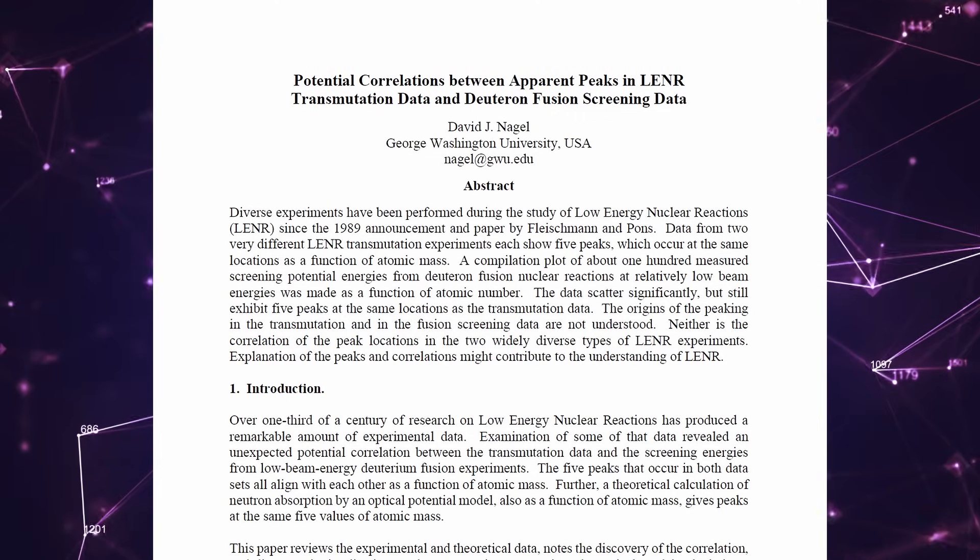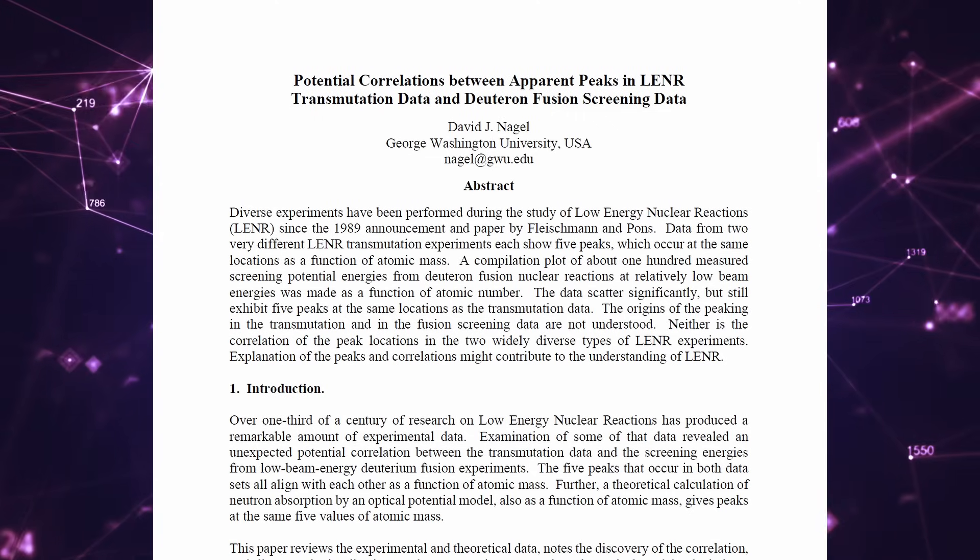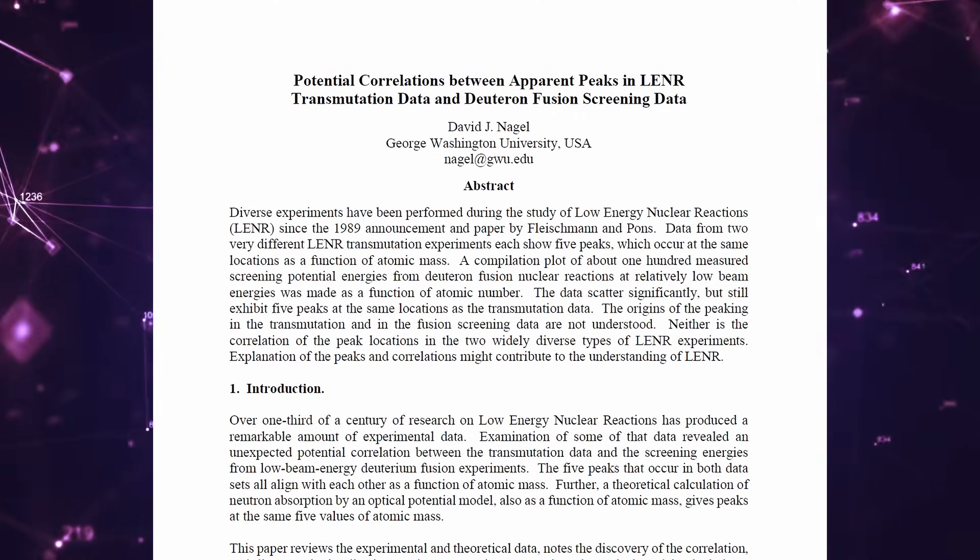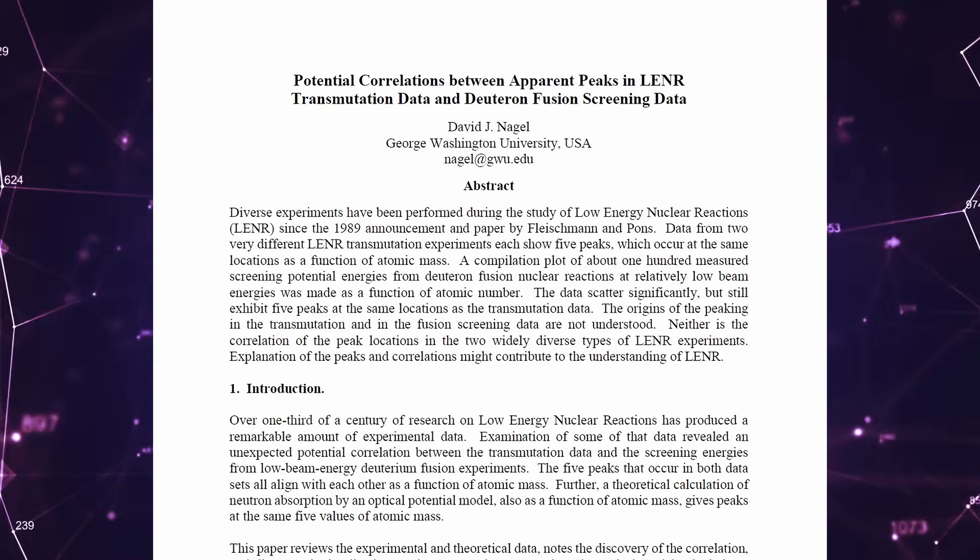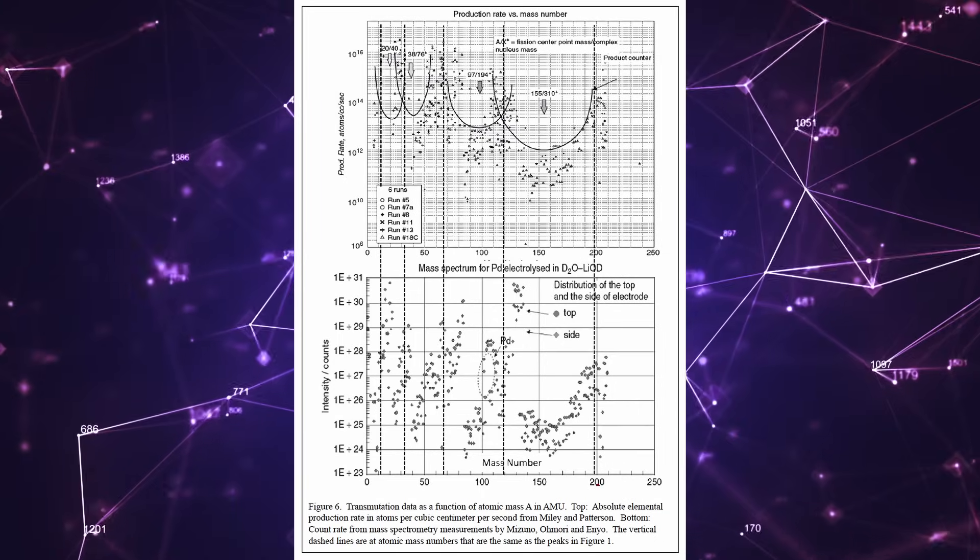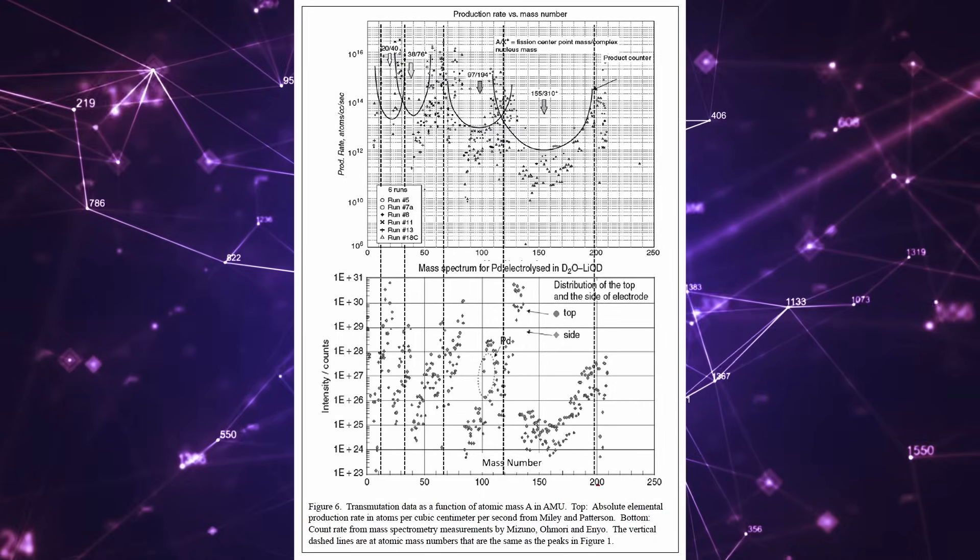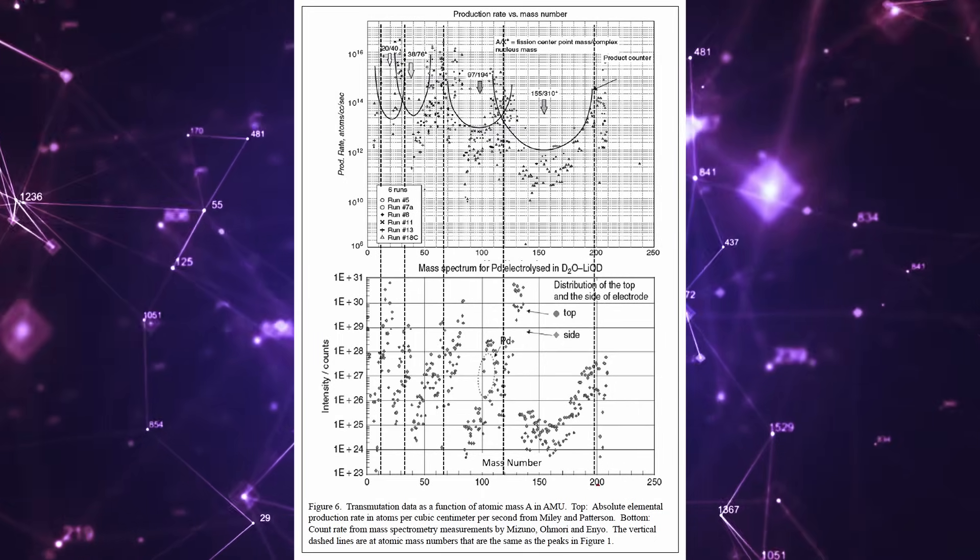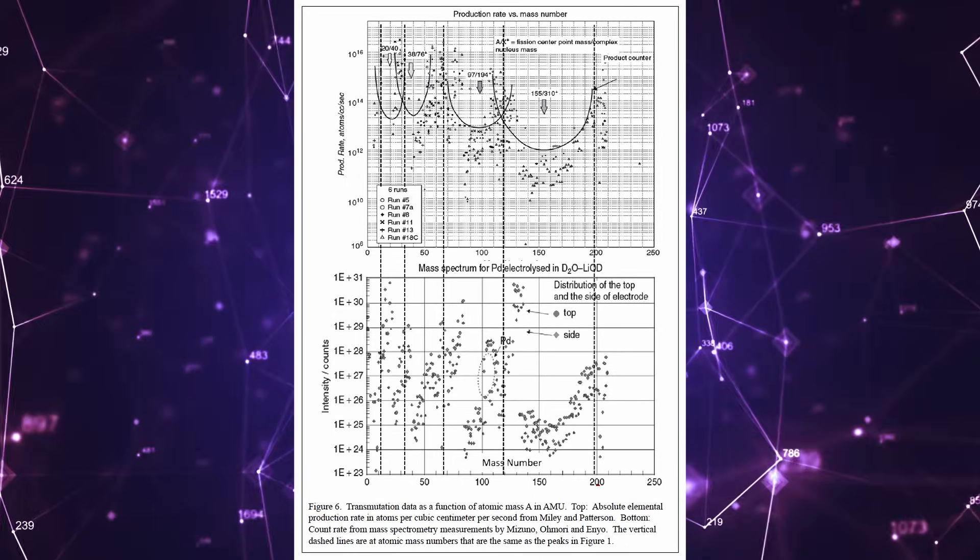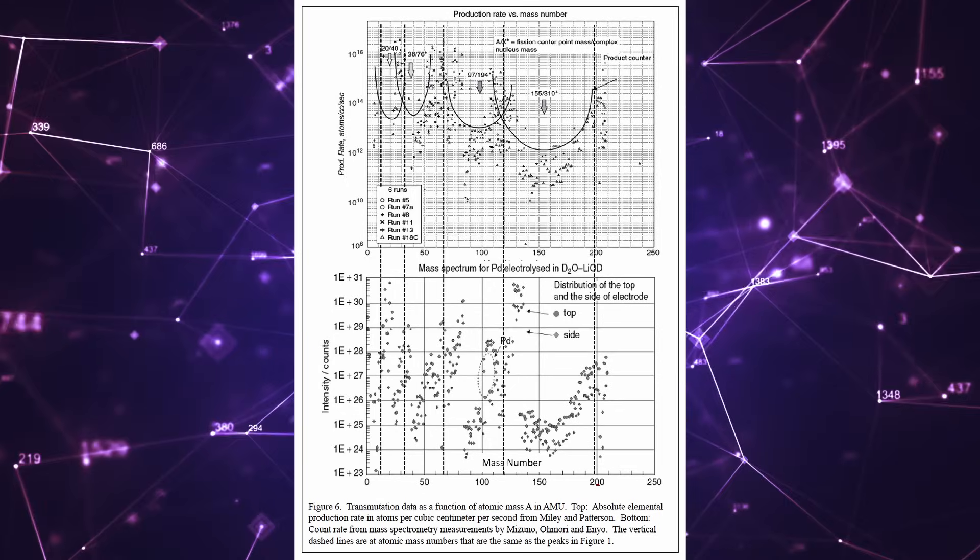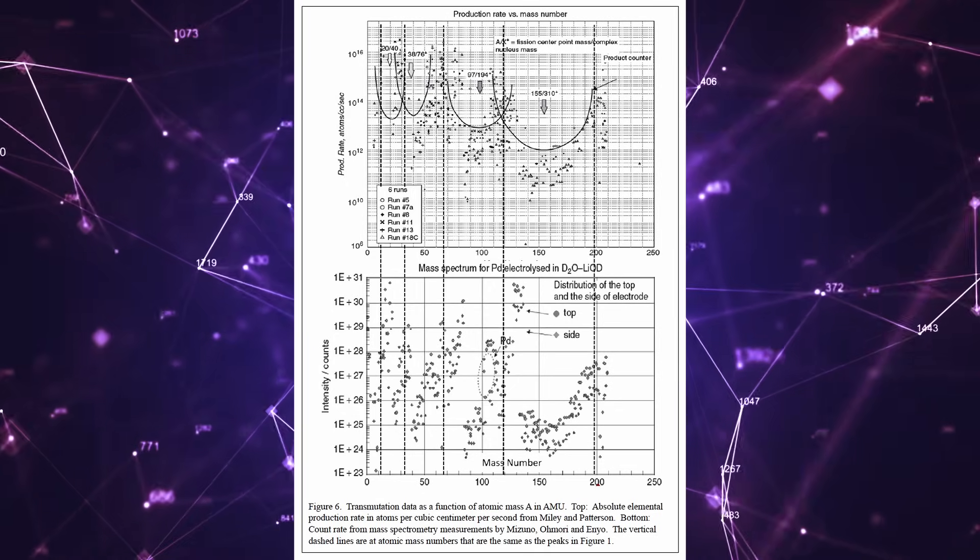David Nagel has examined several well-documented but fundamentally different LENR experiments and found a remarkable consistency. The dataset exhibits five distinct peaks occurring at the same atomic mass locations. This surprising discovery challenges the notion of LENR as a chaotic and unpredictable field, instead suggesting that there may be an underlying structure waiting to be uncovered.